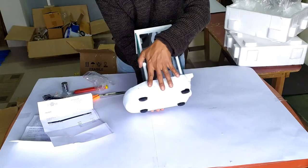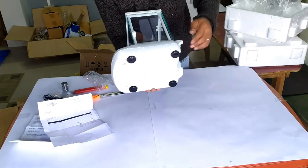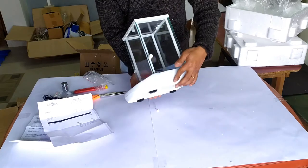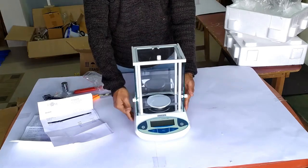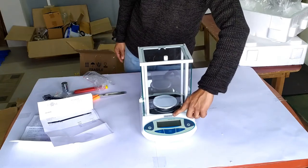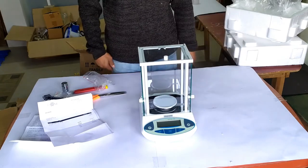These four screws are used to level the balance in a perfectly horizontal plane. You can also see the maximum and minimum holding capacities printed on the front right above the LCD screen.